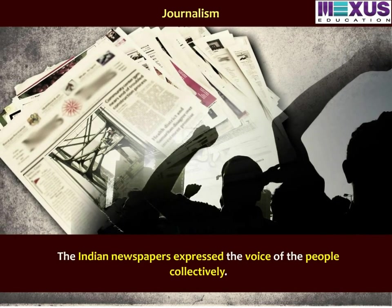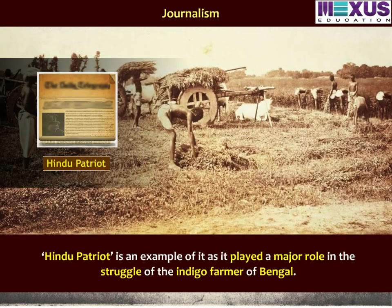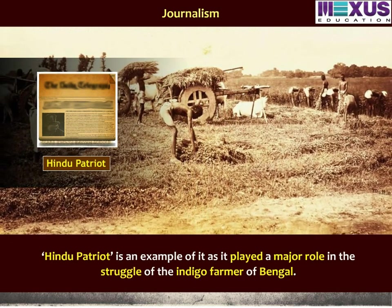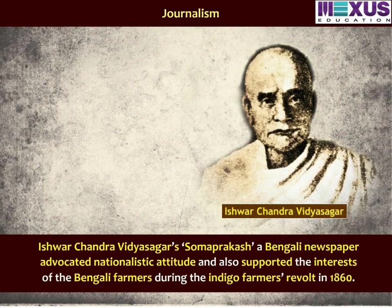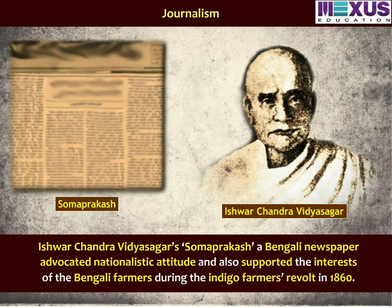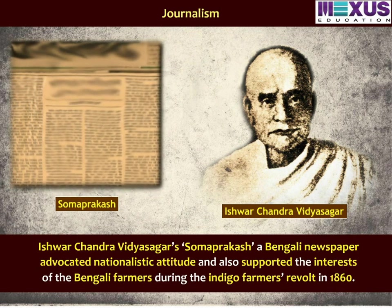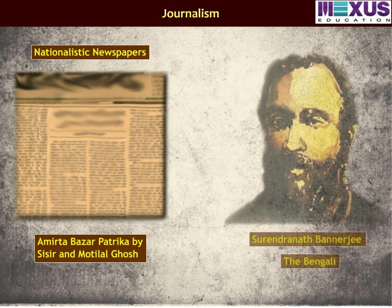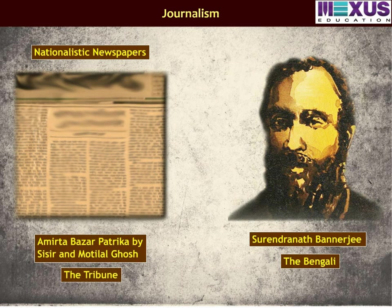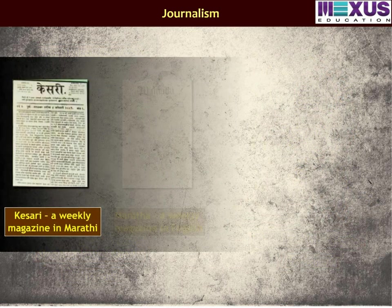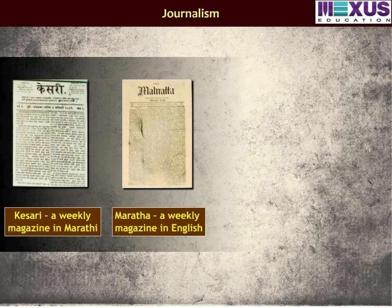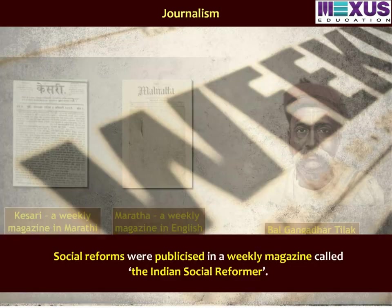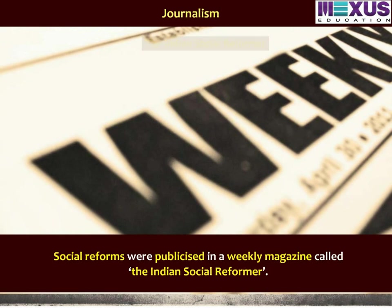The Indian newspapers expressed the voice of the people collectively. Hindu Patriot played a major role in highlighting the struggle of the indigo farmers of Bengal. Iswar Chandra Vidyasagar's Soma Prakasha, a Bengali newspaper, advocated a nationalistic attitude and supported the interests of Bengali farmers during the indigo farmers' revolt in 1860. Amrita Bazaar Patrika by Sisir and Motilal Ghosh, the Bengali by Surendranath Banerjee, and the Tribune were some of the oldest nationalistic newspapers. Weekly magazines named Kesari in Marathi and Maratha in English were started by the prominent extremist Bal Gangadhar Tilak. Social reforms were publicized in a weekly magazine called The Indian Social Reformer.